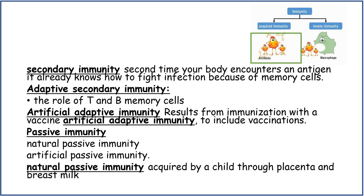Secondary immunity: the second time your body encounters an antigen, it already knows how to fight infection because of memory cells. Adaptive secondary immunity covers the role of T and memory B cells. Artificial adaptive immunity results from immunisation with a vaccine, so it includes vaccinations.